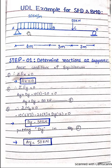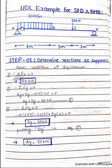A uniformly distributed load (UDL) is one having intensity of load applied uniformly over any span or length of the structure. For example, consider this UDL of 10 kilonewton per meter — meaning for every one meter or per unit length, the intensity of load is uniform from span A to B.